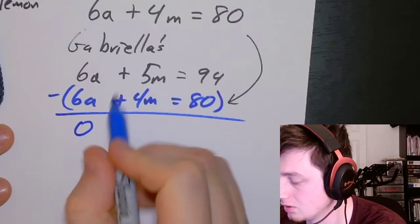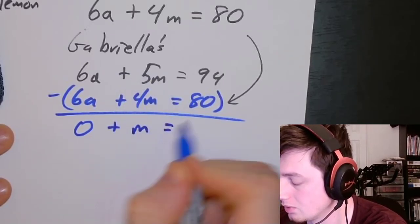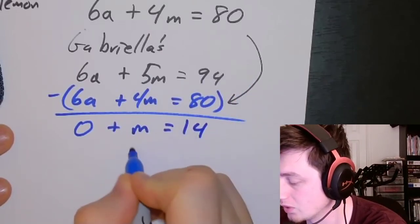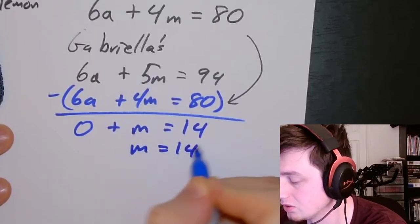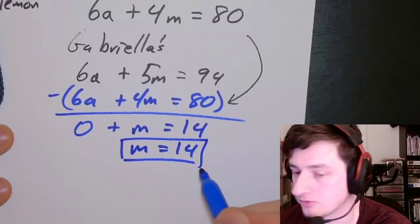5 minus 4 gives us 1M, and 94 minus 80 is going to be 14. So that means the meringue cost $14.